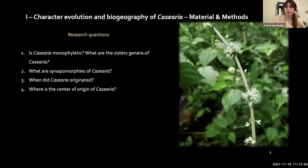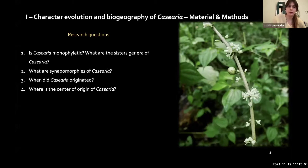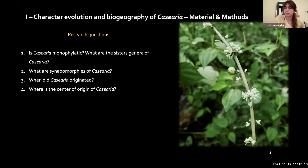They also have axillary flowers, fasciculate inflorescences, and free stamens with staminodes. The main research questions I address in this chapter are: is Casearia monophyletic, what are the sister genera of Casearia, are there synapomorphies for the genus, and when and where did the group originate — the biogeographic center of origin.